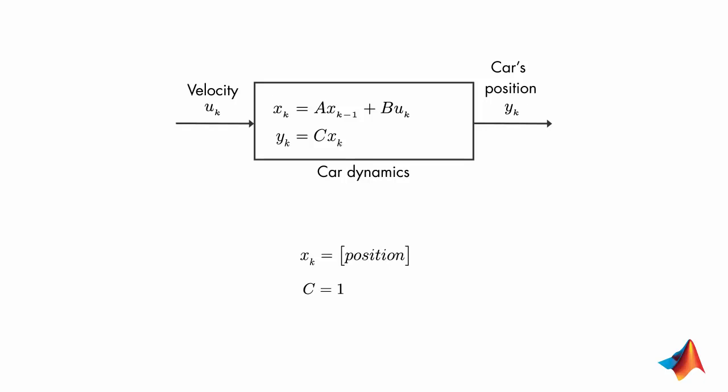We're measuring this state so matrix C is equal to 1. It's important to know why as accurately as possible since we want the car to finish as close as possible to the finish line.